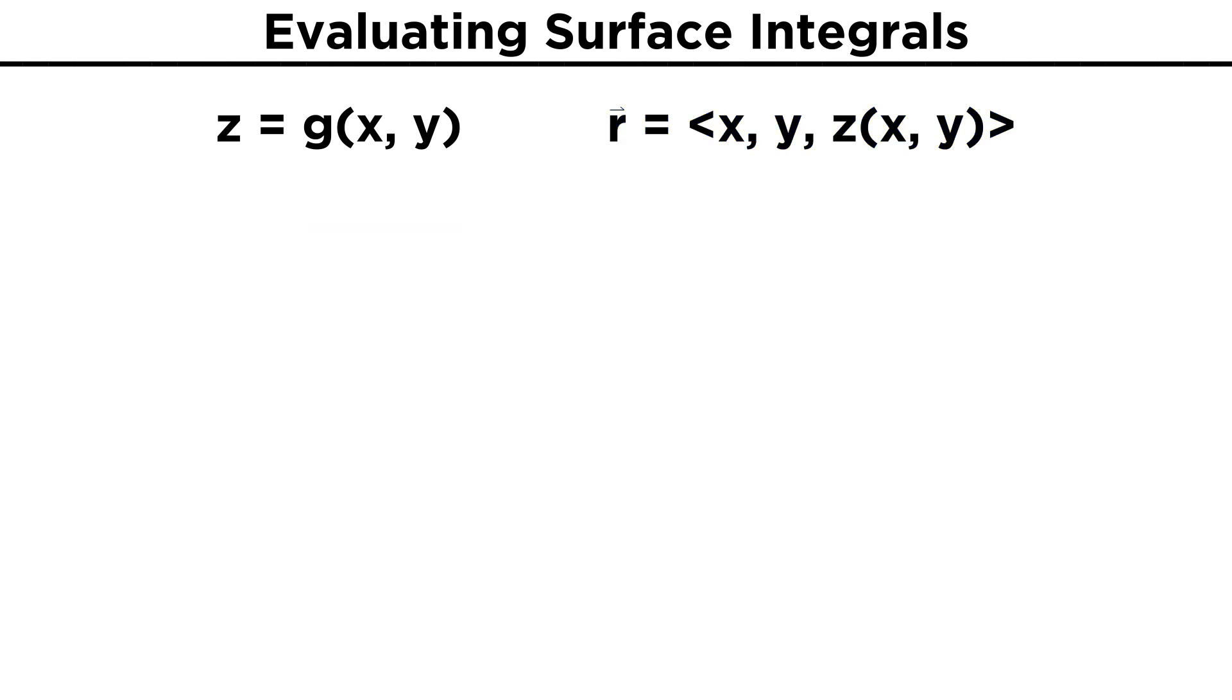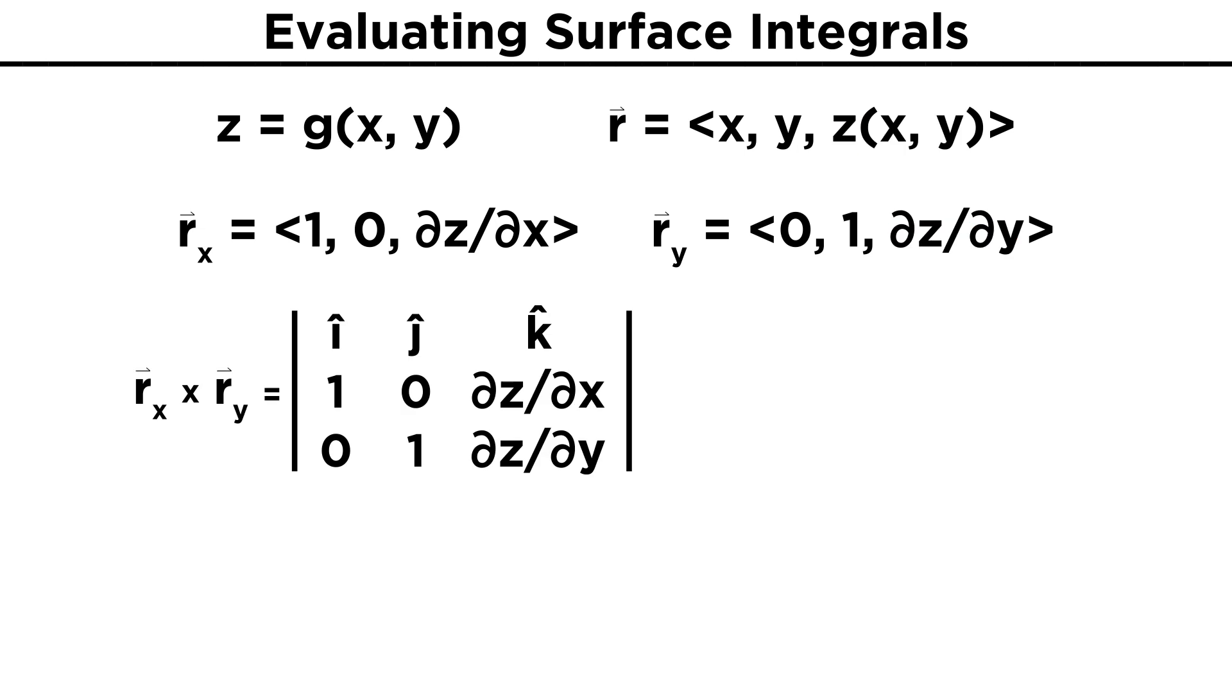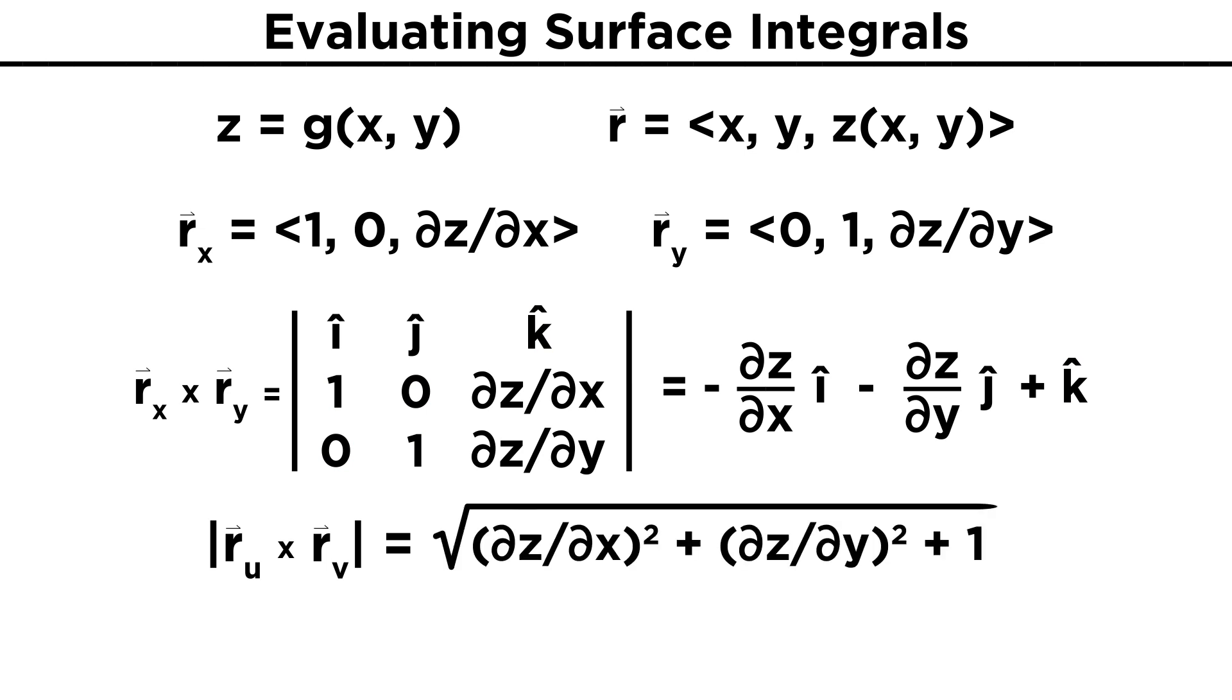Let's find the expression for dS in this case. First, we find the vector R X by taking the X derivative, giving us one, zero, dZ dX. Then we find R Y by taking the Y derivative, giving us zero, one, dZ dY. Now taking the cross product R X cross R Y, we take the determinant of this matrix. We end up getting negative dZ dX I minus dZ dY J plus K. Next we need the magnitude of this cross product, which is the square root of dZ dX squared plus dZ dY squared plus one.